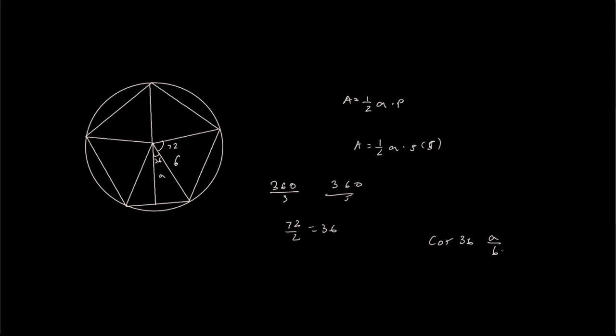Remember, you want to have a calculator in degree mode, and multiply that by 6. We get a value of 4.85. So we know this is 4.85, the apothem.